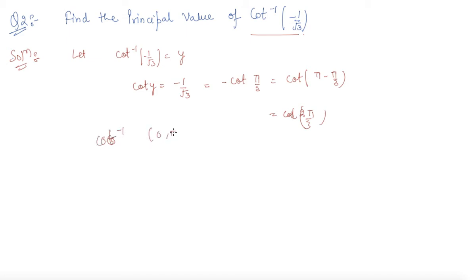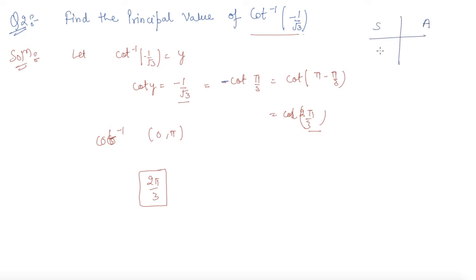The principal value branch of cot inverse is between 0 to pi. Now, cot y equals minus 1 by root 3, which we can write as minus of cot(pi/3), since cot(pi/3) equals 1/√3. In the second quadrant, as we discussed earlier using the ASTC rule, only sin and cosecant are positive, so cot is negative there. So we write it as cot(pi minus pi/3), which gives cot(2pi/3). Since 2pi/3 lies between 0 and pi, the principal value of cot inverse(-1/√3) is 2pi/3.